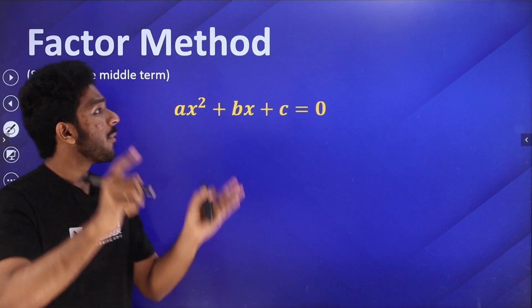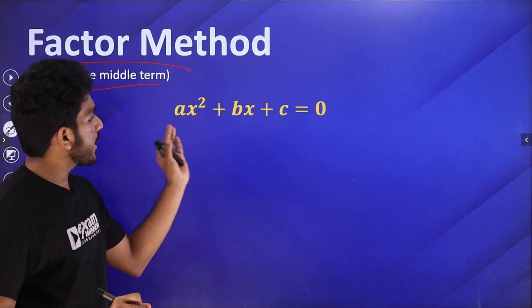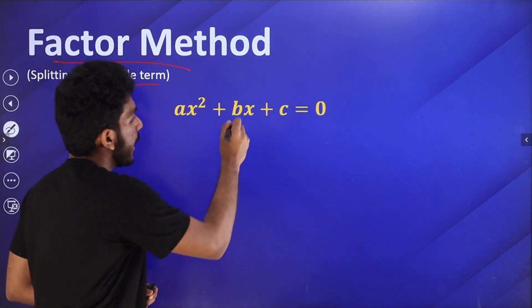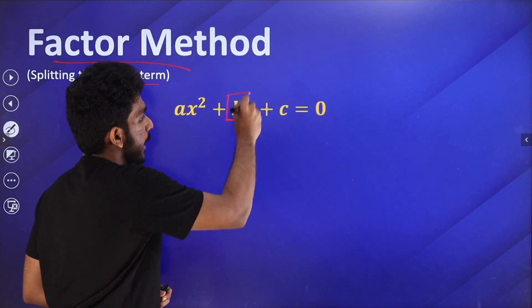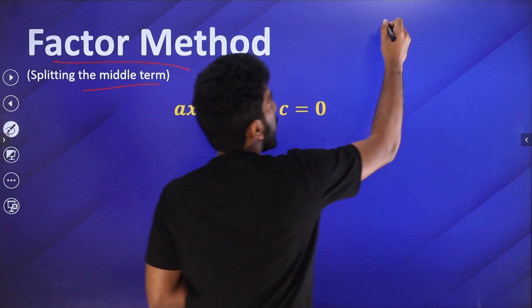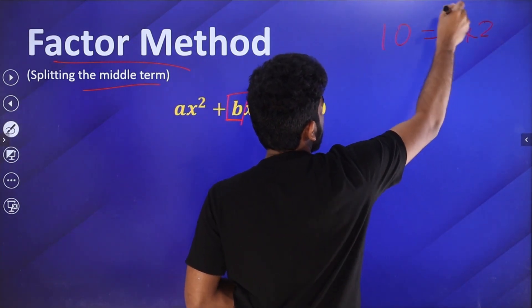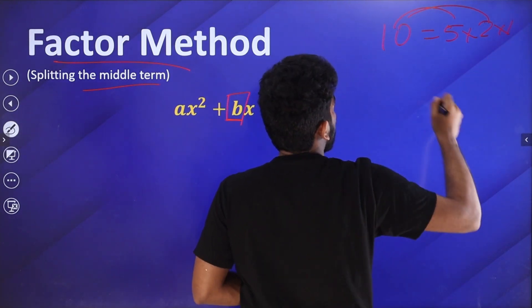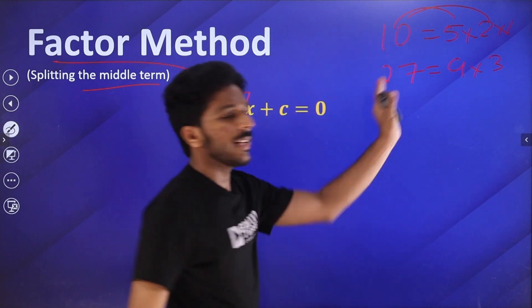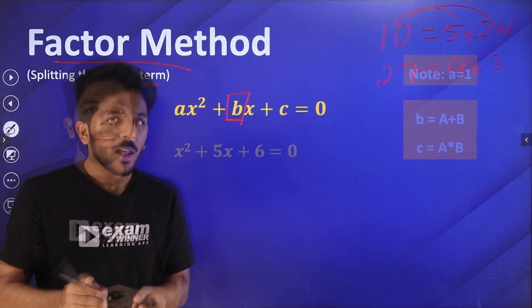In the first method, the factorization method is to split the middle term. The standard form is ax squared plus bx plus c. The middle term is the coefficient of x — that's why we split it and find the factors. For example, 10 is equal to 5 into 2, so 5 and 2 are the factors.